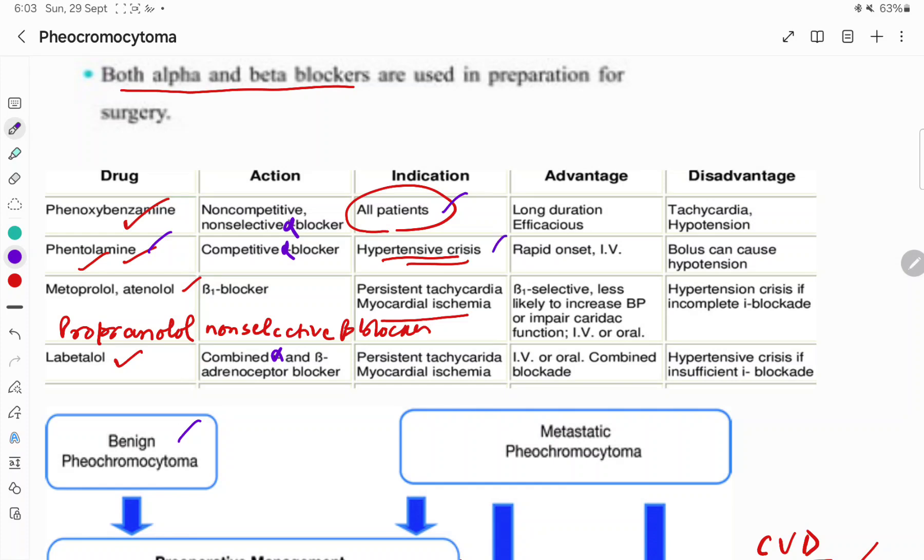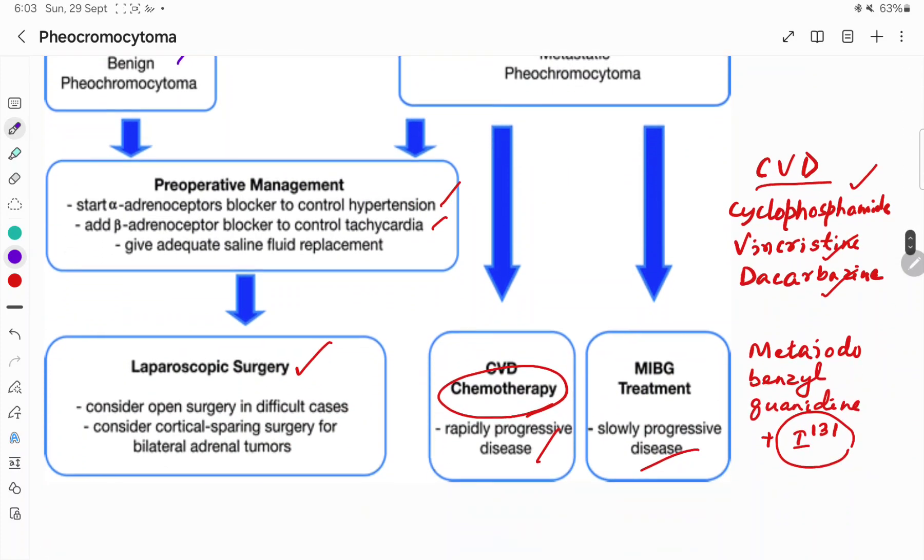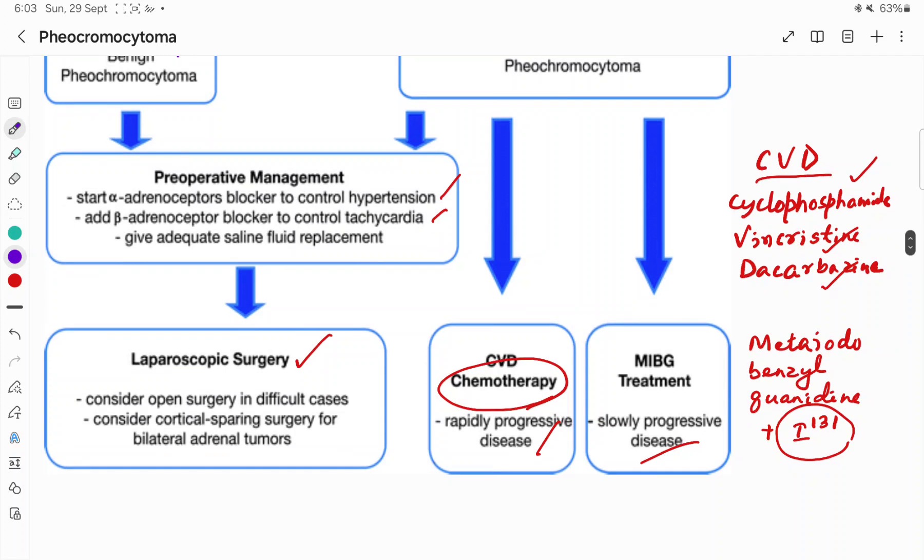If there is persistent tachycardia and myocardial ischemia, then we can add beta blockers or beta-1 selective blockers like metoprolol or atenolol, or non-selective beta blockers like propranolol, or we can use the combined alpha plus beta blocker labetalol. We can also give adequate saline fluid replacement, and then we can go for the surgery.